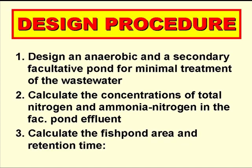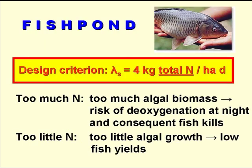The design procedure we use is as follows. First we design an anaerobic pond and a secondary facultative pond in the normal way, and we then calculate the concentrations of total nitrogen and ammonia nitrogen in the facultative pond effluent. For these calculations we use Reed's equation and the Pano and Middlebrooks' equation, and details of these and all the other equations are given in the design summary document for this presentation. Next we design the fish pond, which receives all the facultative pond effluent, and the design criterion we use is a total nitrogen loading of 4 kilos per hectare per day. If there's too much nitrogen, then there's a correspondingly high concentration of algal biomass, and therefore risks of deoxygenation at night, and thus fish kills. And if there's too little nitrogen, then we get low fish yields.